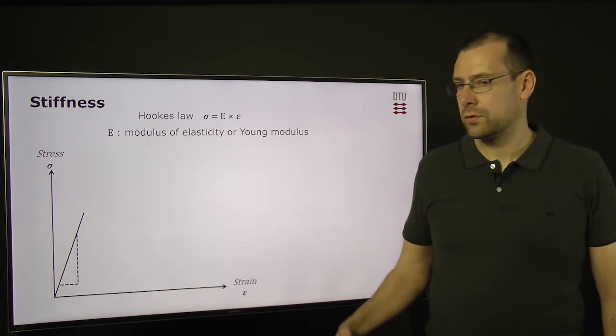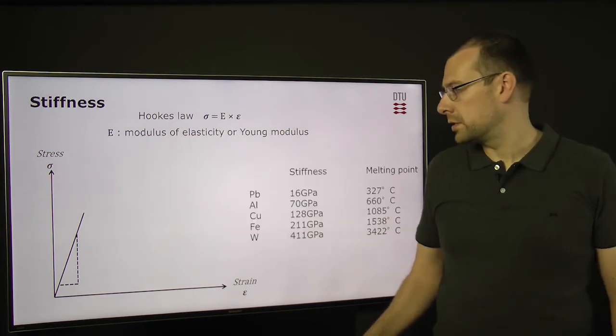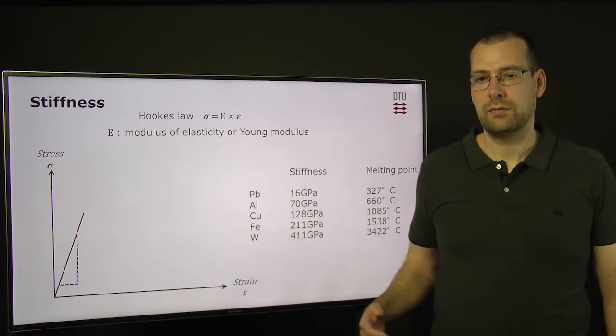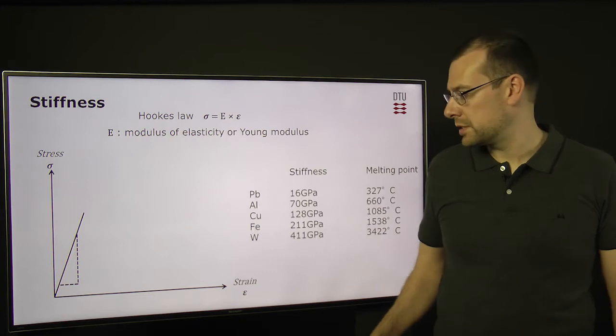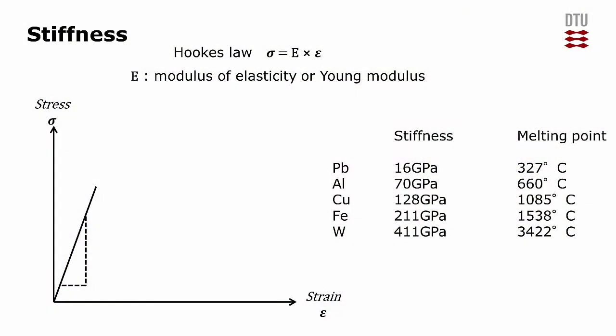The stiffness is related to how strong the atomic bonds are, and this is also related to the melting point. So all iron-based alloys will have roughly the same stiffness, while all aluminium-based alloys will have roughly the same stiffness. If you want to change the stiffness, you need a major change in chemical composition.